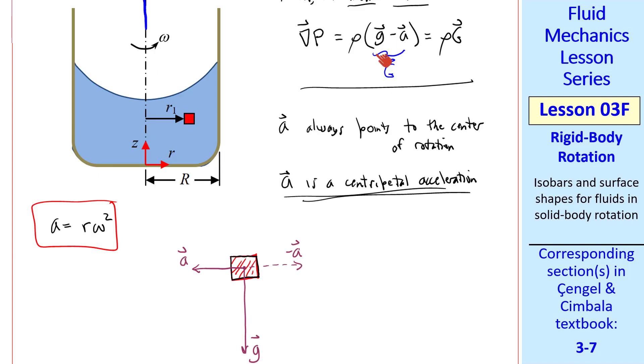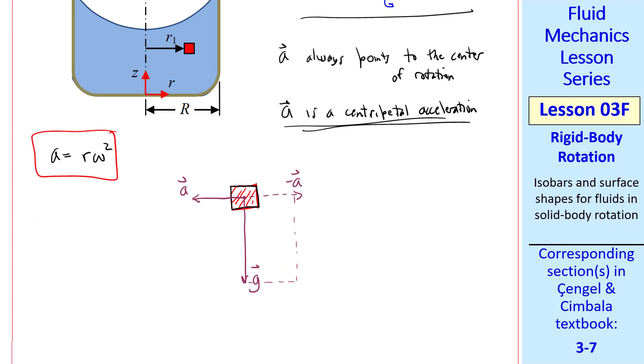In other words, vectorially sum G minus A. Here's G, here's A, so here's minus A. We complete the parallelogram to get capital G, the modified gravity vector. The fluid particle feels a modified gravity vector as sketched. The isobars will be perpendicular to this modified gravity vector, just as they were for the case of linear acceleration.